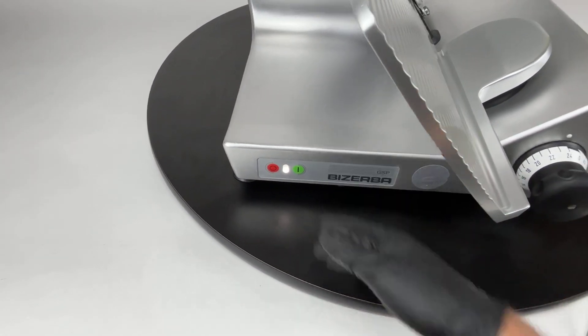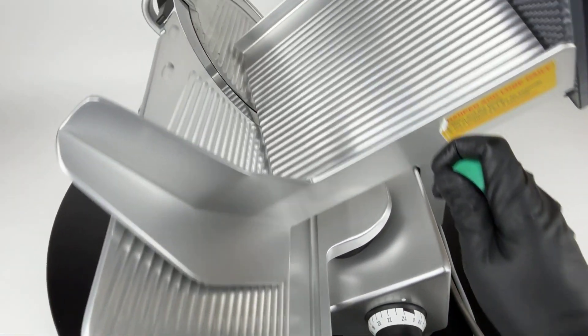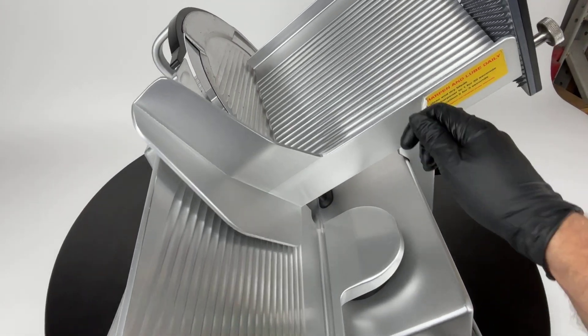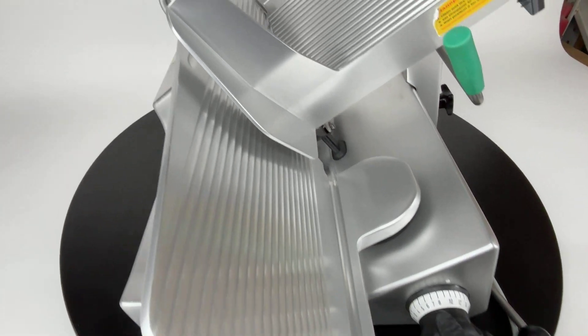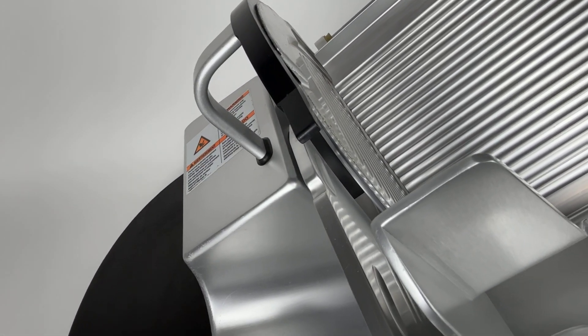Red is off, green is on. There you go. As you can see here, there's the carriage sliding back and forth. This dial drops the gauge plate right there.